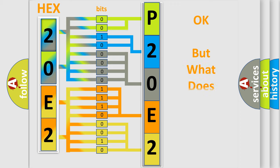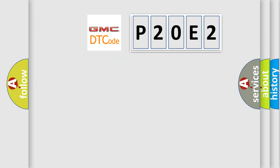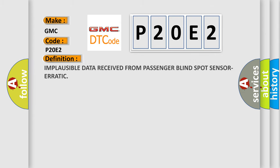The number itself does not make sense to us if we cannot assign information about what it actually expresses. So, what does the diagnostic trouble code P20E2 interpret specifically for GMC car manufacturers? The basic definition is: Implausible data received from passenger blind spot sensor erratic.